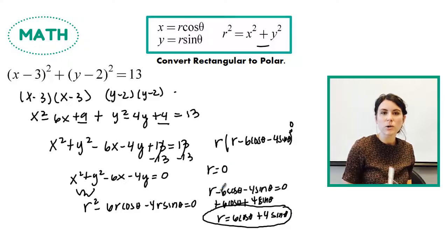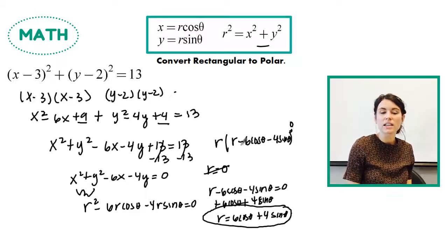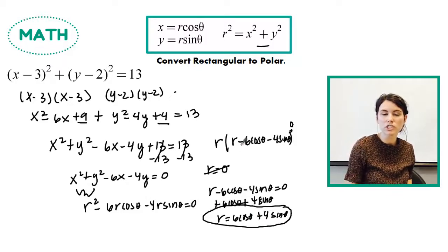So since r equals 0 is on the equation r equals 6 cosine theta plus 4 sine theta, we don't need this, because it's contained in this equation. So that's it. We're done. We've learned how to convert a rectangular equation to a polar equation.